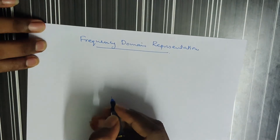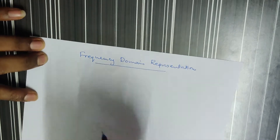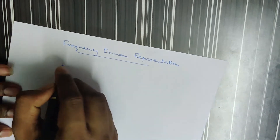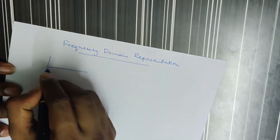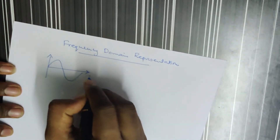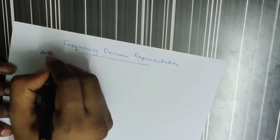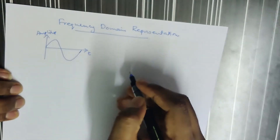The topic is Frequency Domain Representation. We have a signal called Time Domain. For example, we are taking a sine wave. That sine wave has x-axis as time and y-axis as amplitude, which is called voltage. So when we plot a signal, the main parameter is called Time Domain.